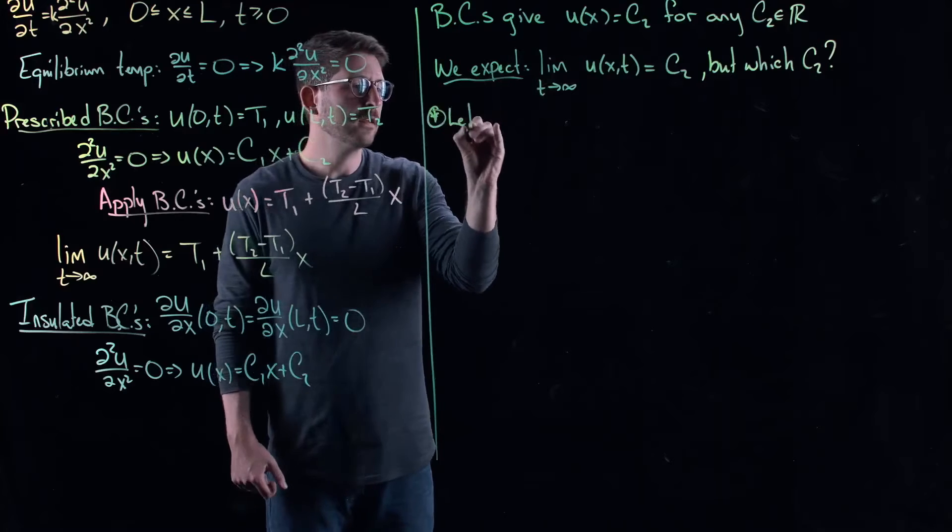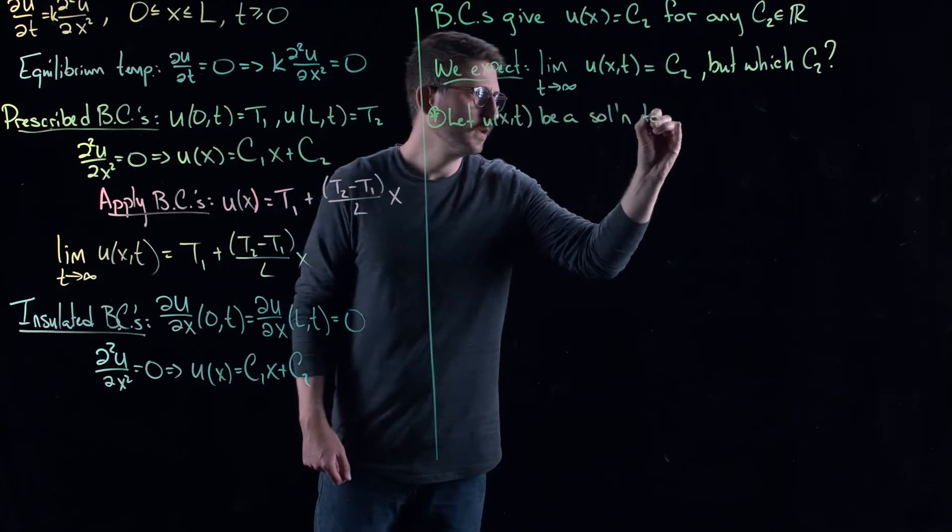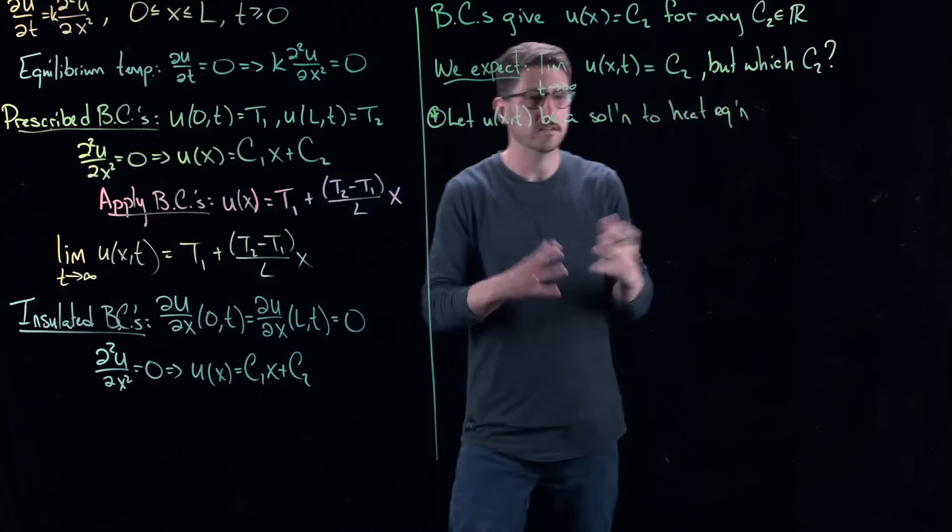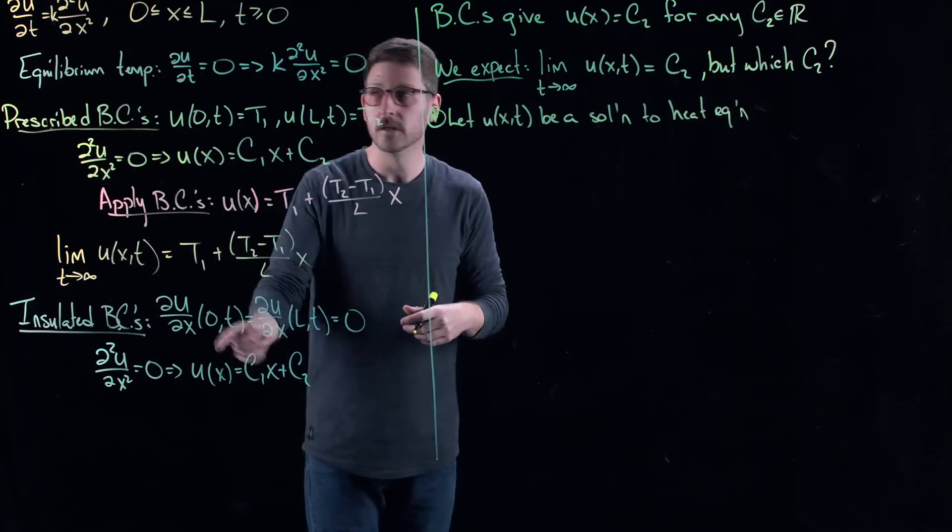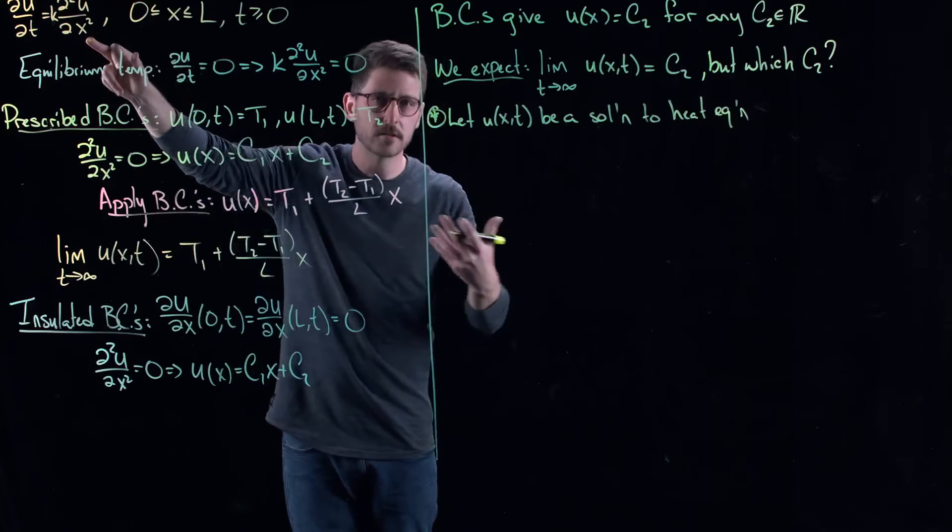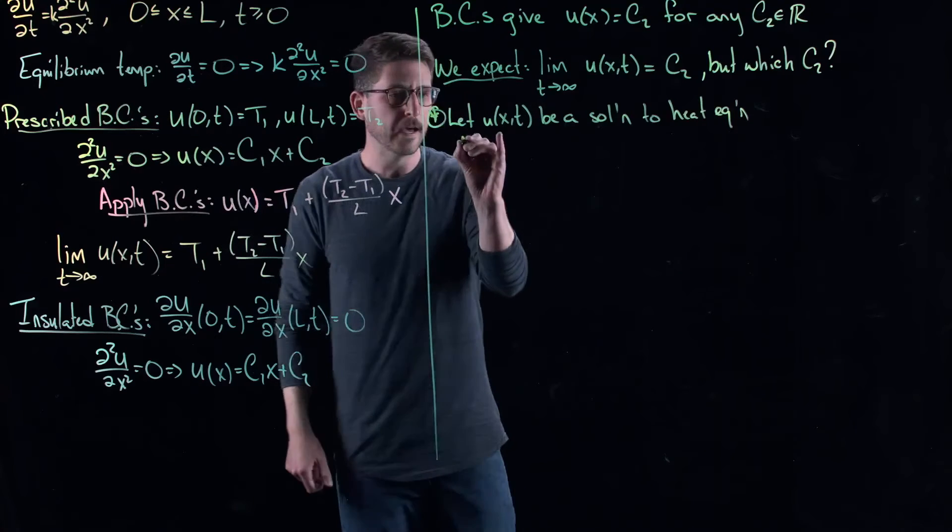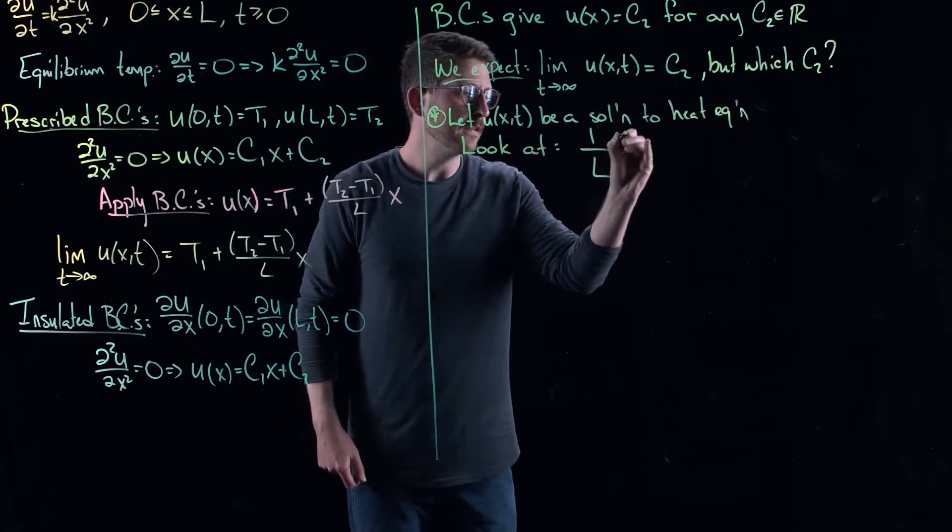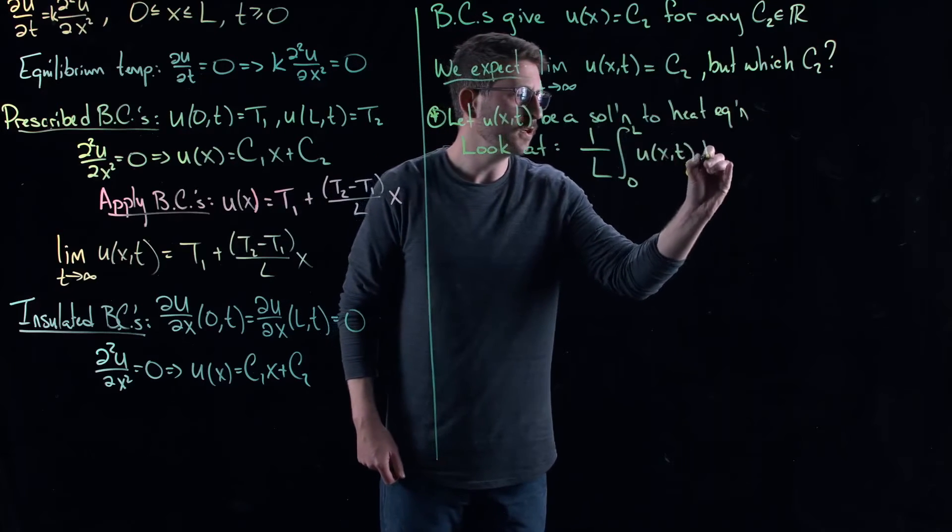But okay, let's say let u of x and t be a solution to the heat equation. So this thing could change in space and time. So whatever your initial distribution of heat is, you float forward according to these boundary conditions. I haven't told you if solutions exist or not. But I'm going to tell you, solutions exist, they are unique, you have these standard existence, uniqueness things for these. Let's look at, I want to look at the average over space as a function of time.